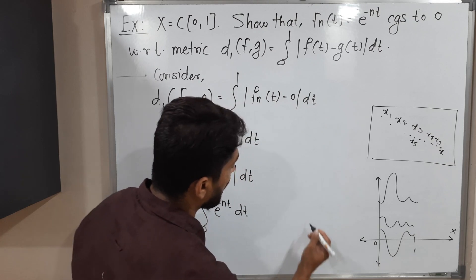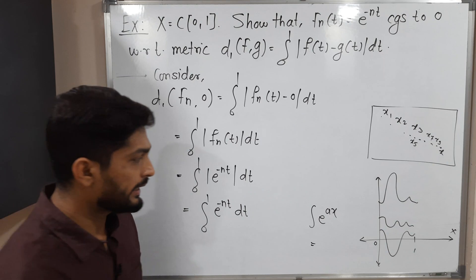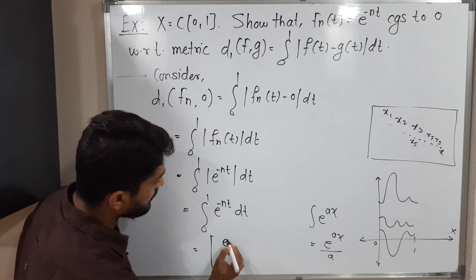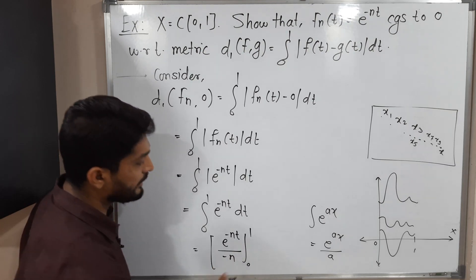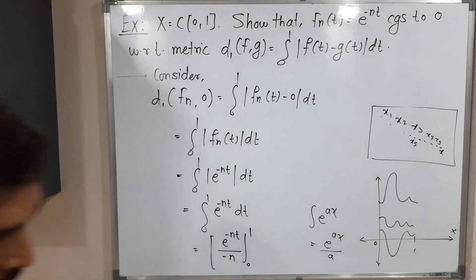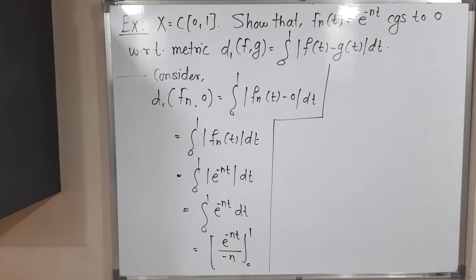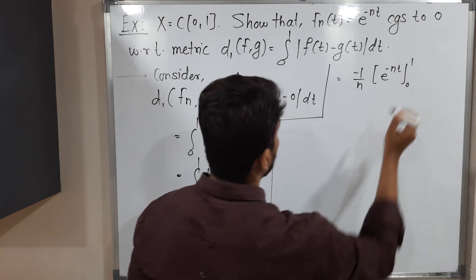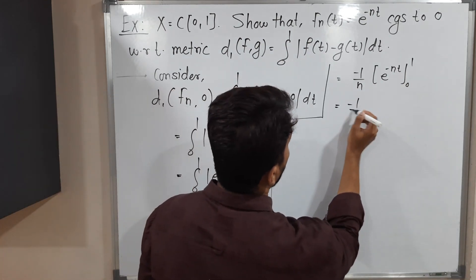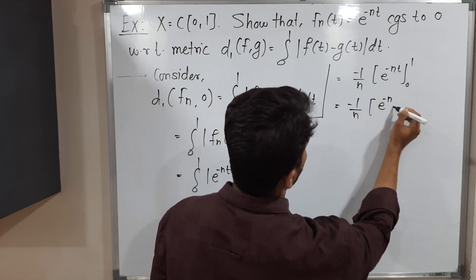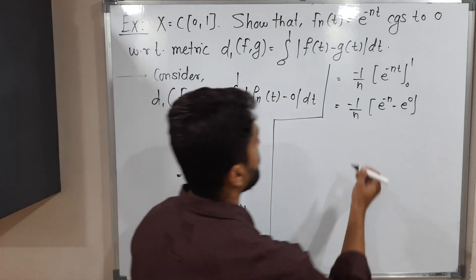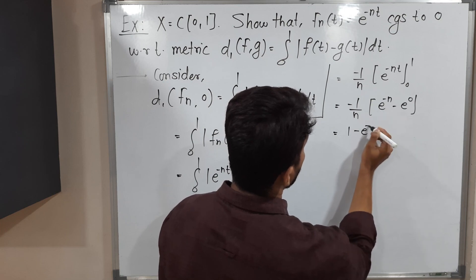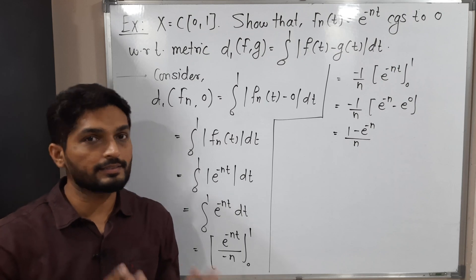The formula for the integration of e raised to ax is e raised to ax upon a. At the place of a we have minus n, so we write e raised to minus nt upon minus n, with limits 0 to 1. Since minus n is a constant, let us take it outside: minus 1 by n times e raised to minus nt, from 0 to 1. Putting the upper limit, e raised to minus n; putting 0, e raised to 0 is 1. Because of the minus sign these terms interchange — so we get: 1 minus e raised to minus n, all upon n. This is the distance between fn and 0.